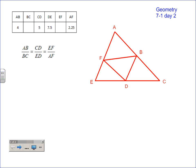So here it says AB is 4, so you find AB and put 4 in there. BC is unknown, so we'll wait. CD is 5, DE is 7.5, and AF is 2.25. That's basically what the picture would look like to get started. Now sometimes the picture isn't going to be as helpful as the proportion, and sometimes the proportion won't be as helpful as the picture, so you've got to look at them both.